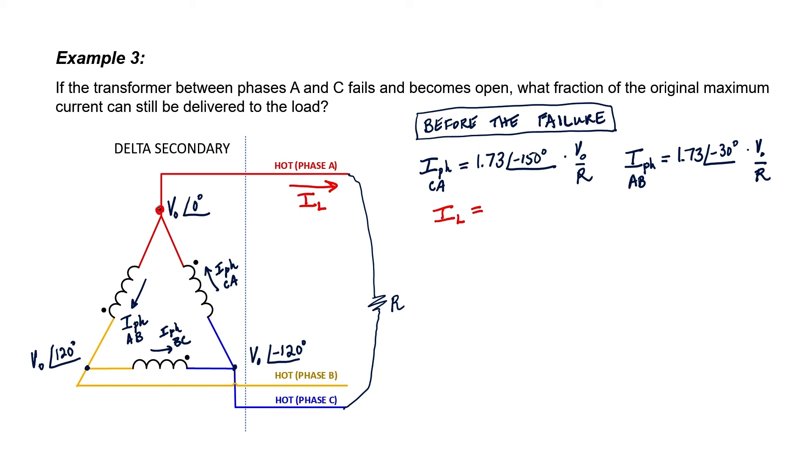Applying the Kirchhoff current law at the node of phase A, we know that the line current is the difference of these two phase currents. We can substitute in from what we found before, and if we convert from polar to rectangular, then we quickly find that the imaginary parts cancel and we wind up with just three.